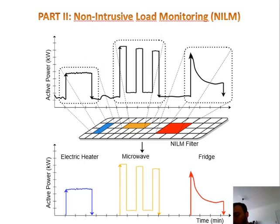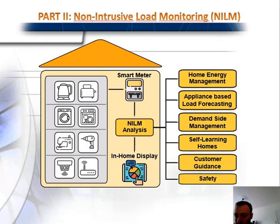Using a kind of NILM filter, we try to obtain appliance-level energy consumption data. As shown in the figure, from the smart meter data we obtain electric heater, microwave, and fridge data individually. We read the data from the smart meter, analyze it with NILM, and then either show it to customers through in-home displays or take actions such as home energy management, appliance-based load forecasting, and demand-side management.